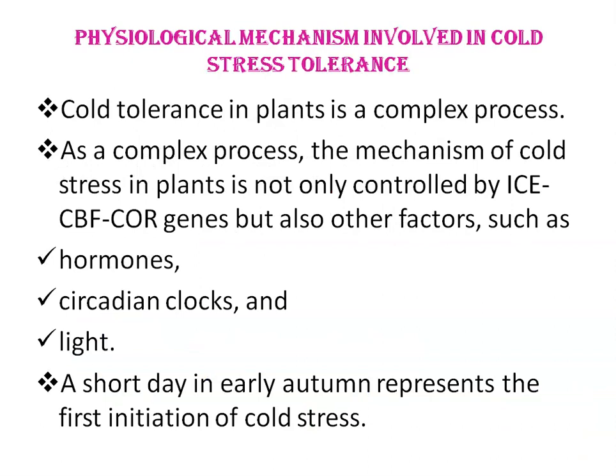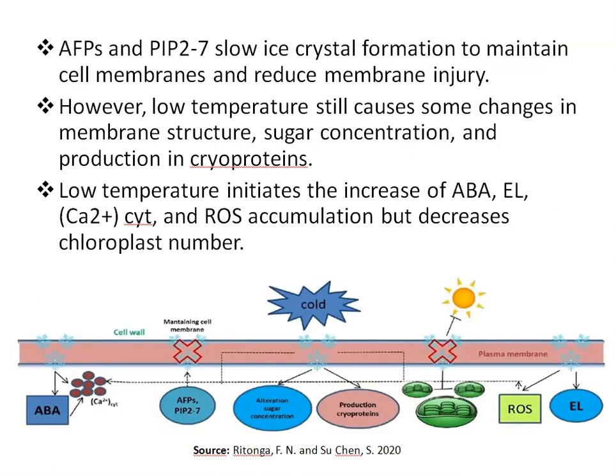Next is the physiological mechanism involved in cold stress tolerance. Cold tolerance in plants is a complex process. The mechanism of cold stress in plants is not only controlled by the ICE-CBF-COR gene pathway, but also other factors such as hormones, circadian clocks, and light are involved. A short day in early autumn represents the first signal of cold stress.